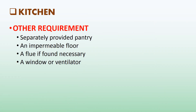Other kitchen requirements: every kitchen shall have, first, means for washing kitchen utensils — unless separately provided in a pantry — leading directly or through a sink to a grated and trapped connection to the waste pipe. Second, an impermeable floor. Third, a flue, if found necessary. And lastly, a window or ventilator.